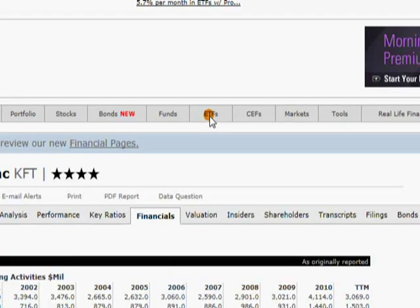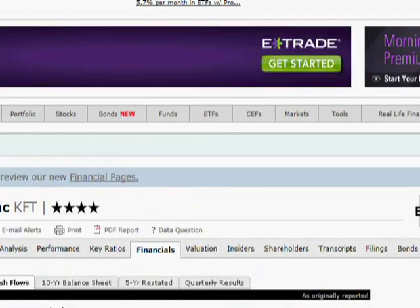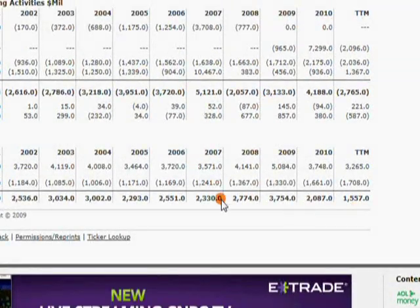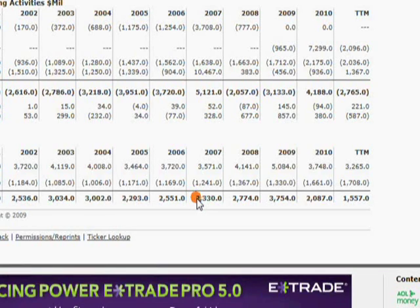Continuing, once you have these four areas filled in—the growth rate, the discount rate, the free cash flow number, and the shares outstanding—you can then go ahead and press this button here, called Estimate Intrinsic Value Per Share.